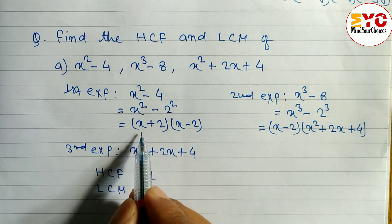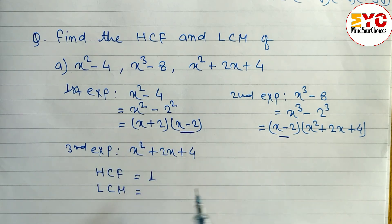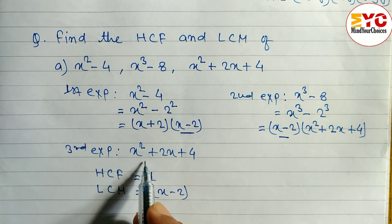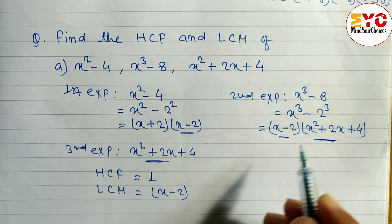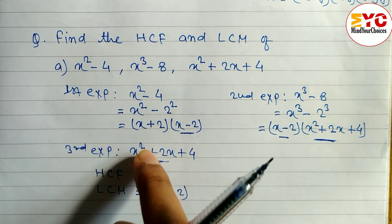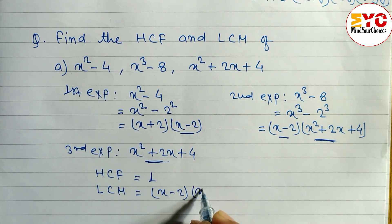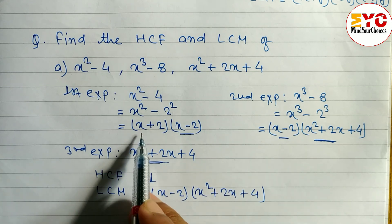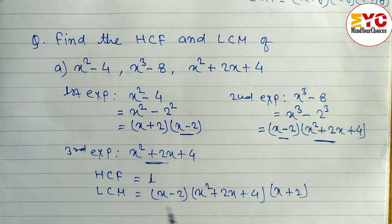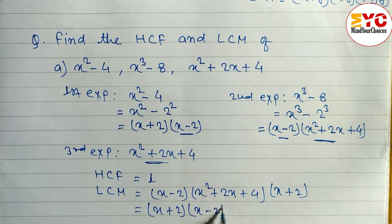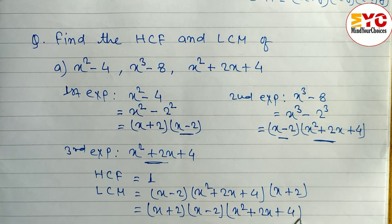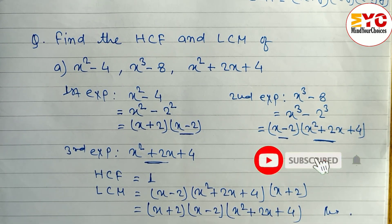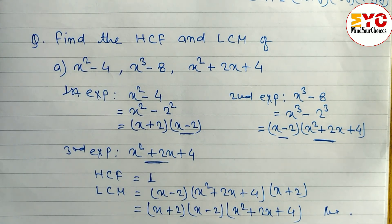For the LCM, we include all common and remaining unique elements. x - 2 is common to the first and second. x² + 2x + 4 is common to the second and third. x + 2 is the remaining factor from the first. So the LCM is (x + 2)(x - 2)(x² + 2x + 4). Hope you understand this question related to SCF and LCM.